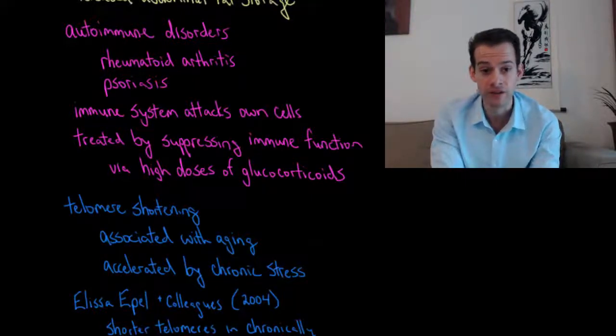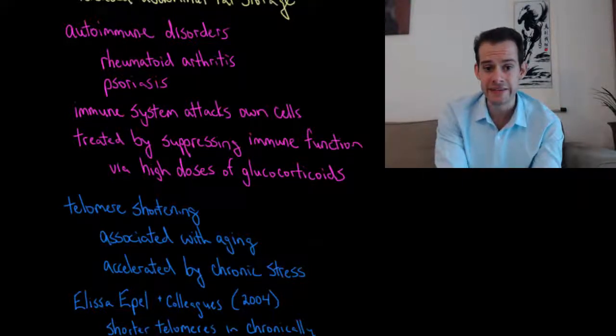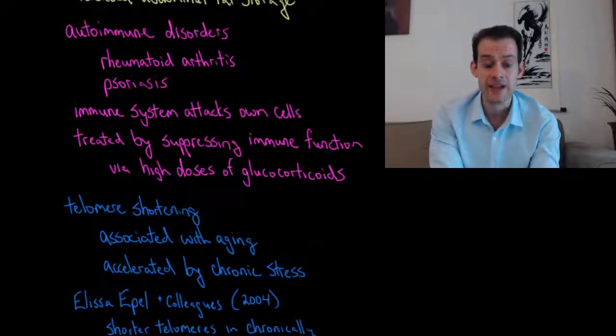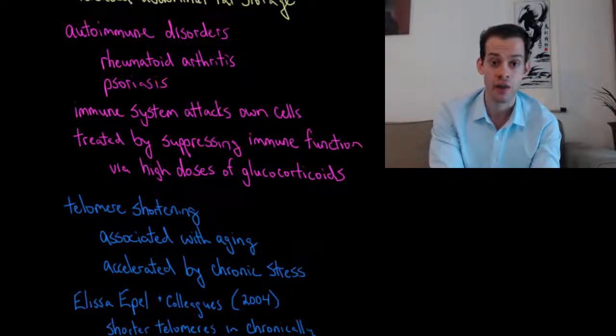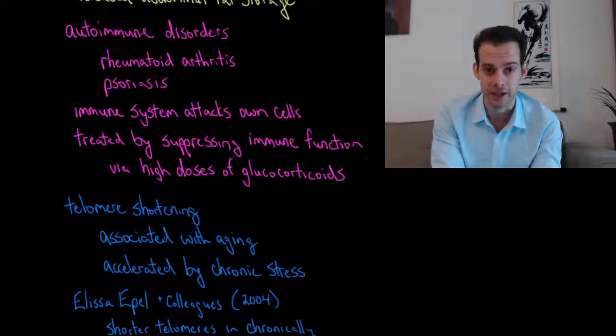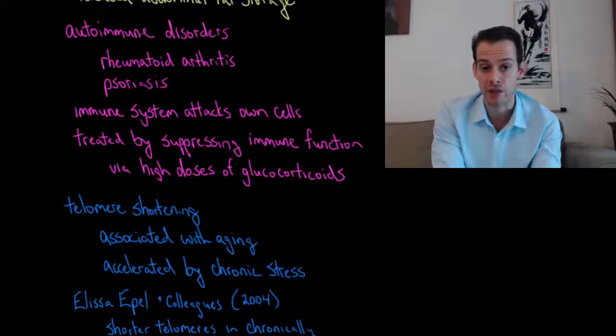But we also have other autoimmune disorders where the immune system attacks healthy cells in the body. And these include rheumatoid arthritis as well as psoriasis. And the way that these types of autoimmune disorders can be treated, one technique for treating them, is to give patients high doses of glucocorticoids. Because this is going to suppress the immune system's functioning. And by suppressing the immune system's functioning, it's less able to attack the body's own healthy cells.